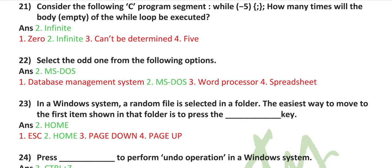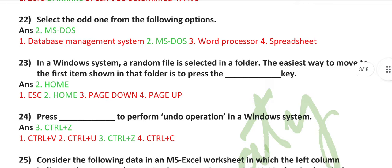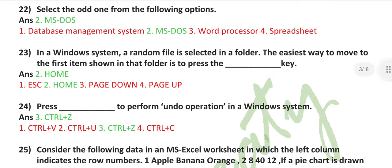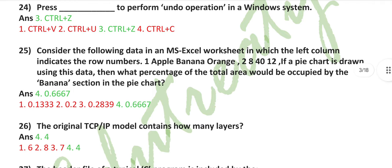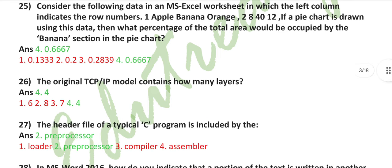Select the odd one from the following options: MS-DOS. In a Windows system, a random file is selected in a folder. The easiest way to move to the first item source in that folder is to press the home key. Press Control plus Z to perform undo operation in a Windows system.